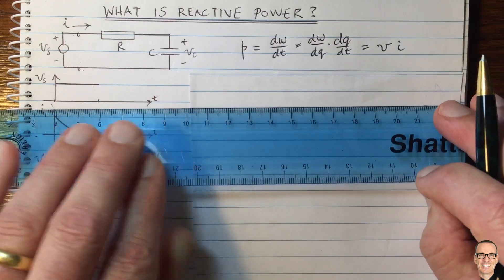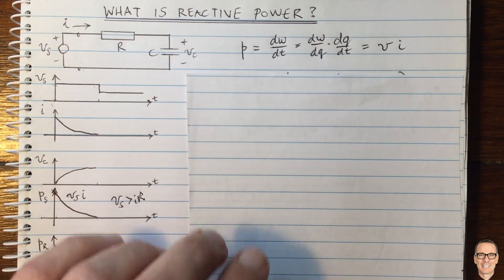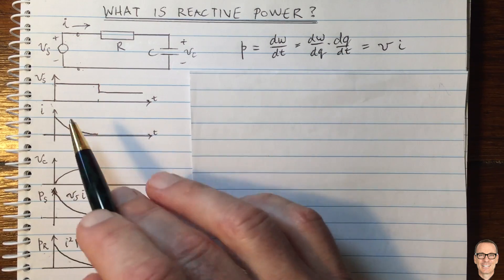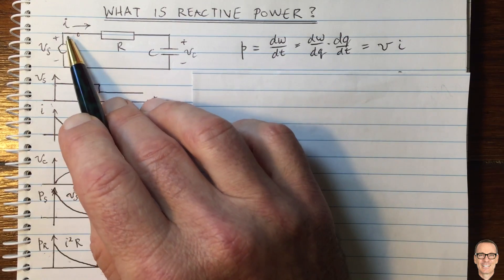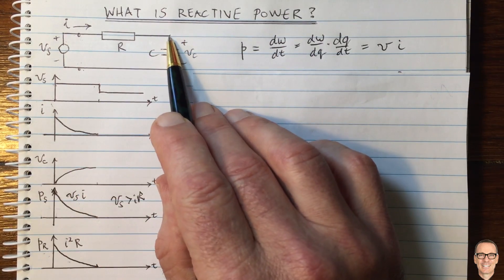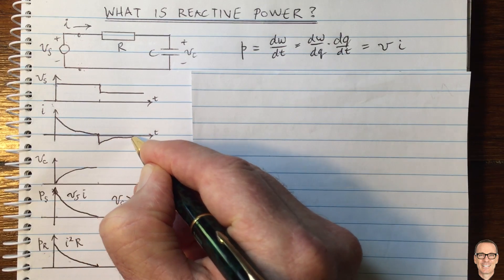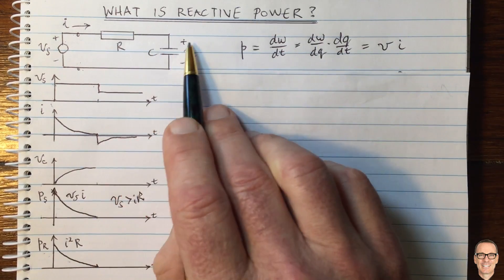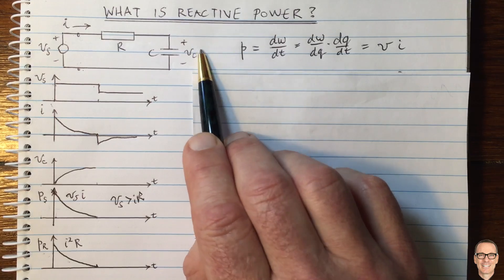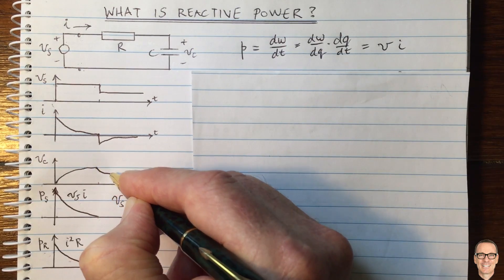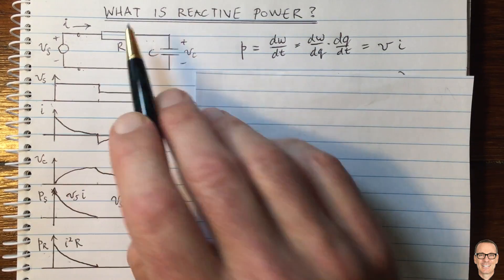Now let's think about what happens when the voltage source changes — say the voltage drops to a lower constant value. The same dynamics occur but in reverse. Now the source voltage is lower than the capacitor voltage, so current flows in the other direction — negative on the plot. Electrons return to the top plate, causing the capacitor voltage to decrease until it matches the new source voltage, at which point there's no voltage drop across the resistor and the current goes to zero.